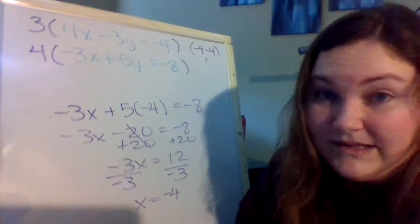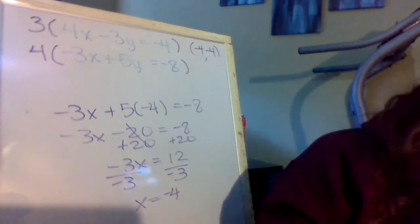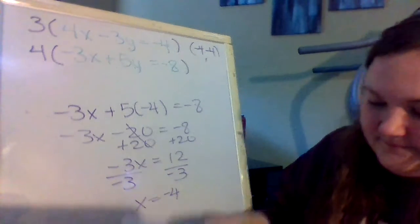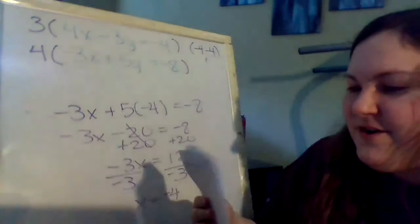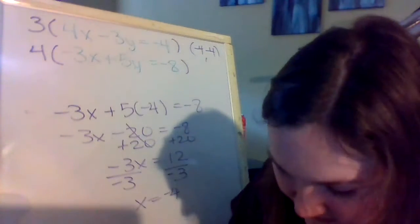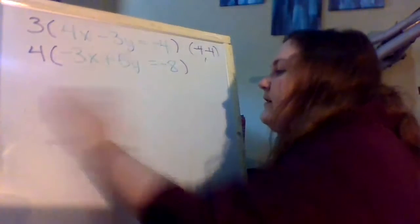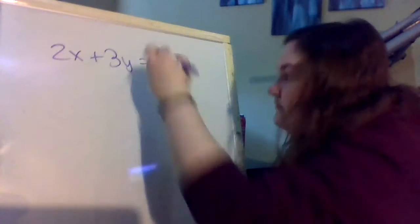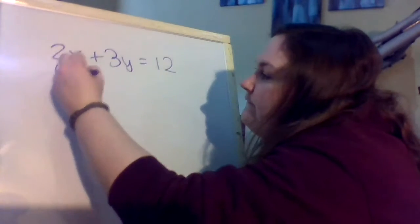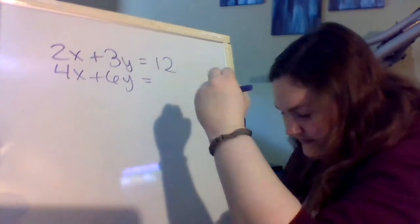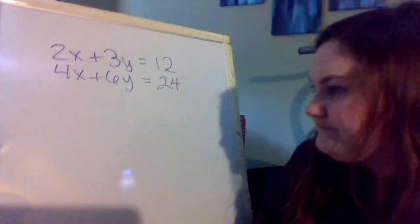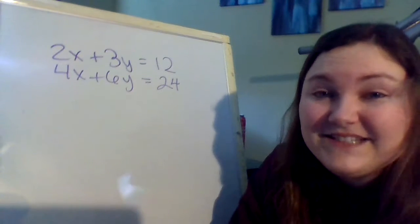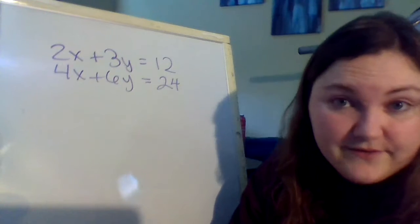There is one last part of these notes that I want to look at with you. And that is on the back side of the notes where it says, what if this happens? I'm going to go ahead and look at the first one under that header. So if we've got 2x plus 3y equals 12 and 4x plus 6y equals 24. Go ahead for a second, if you want to pause this video, see if you know what to do to start solving this system of equations.